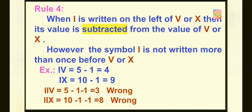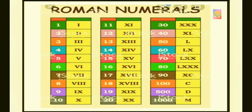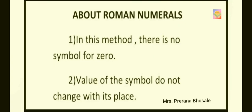So students, before you write Roman numerals, you should know all 4 rules. If you know the symbols used to write Roman numerals and if you know the rules, then it is easy to write Roman numerals. Here is the list of Roman numerals from 1 to 20, and 30, 40, 50, 60, 70, 80, 90, 100, 500, and 1000. In this method, there is no symbol for 0, and the value of a symbol does not change with its place.